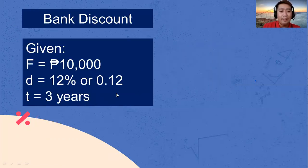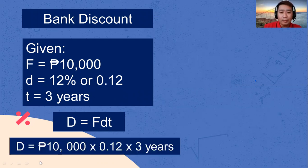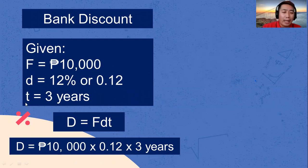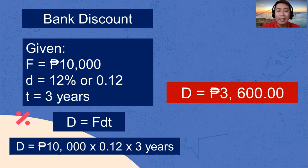We substitute the given into the formula. D equals 10,000 pesos multiplied by 0.12 multiplied by 3 years. The final answer is 3,600 pesos. The bank discount of 10,000 pesos at a 12% discount rate payable in 3 years is 3,600 pesos.